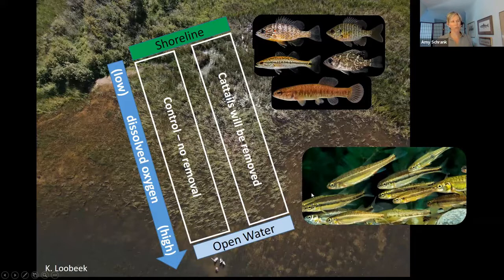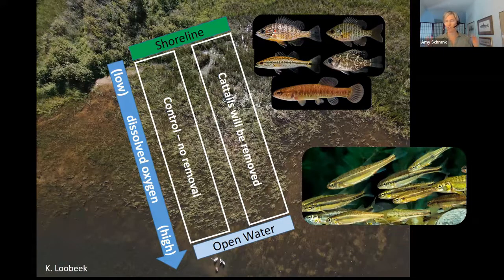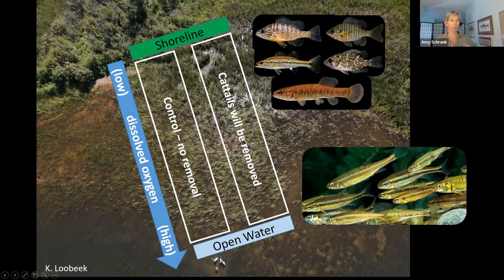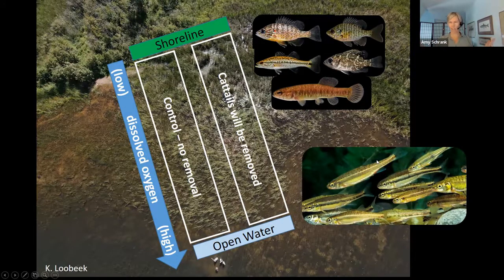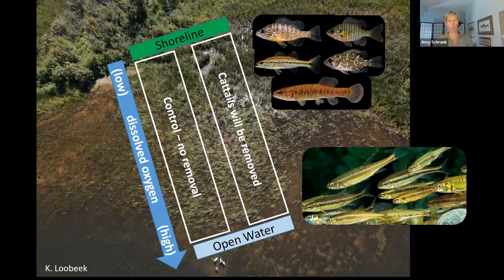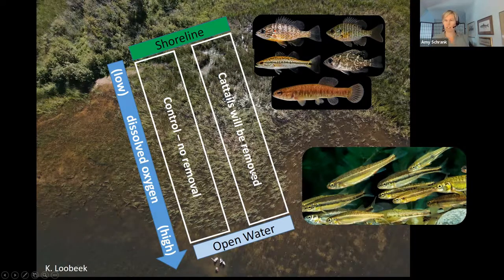Minnows prefer open, bulrush-type habitat, while sunfishes hide in dense vegetation — that's their anti-predator strategy. When you look at what game fish eat, it's largely minnows because they're easier to eat and less spiky. So if cattail is reducing our population of minnows or forage fish for game species, there might be real ramifications for lake fish communities. We saw similar things in the Great Lakes, and I'm really interested to see once we remove cattail, whether we see a totally different community. We'll have to find out next year.